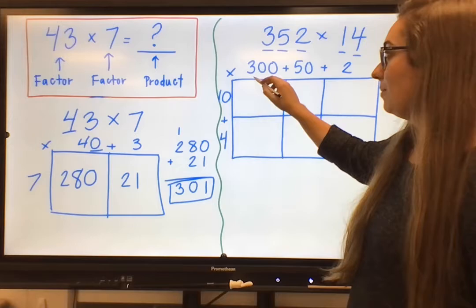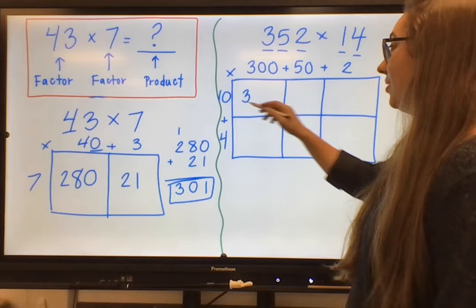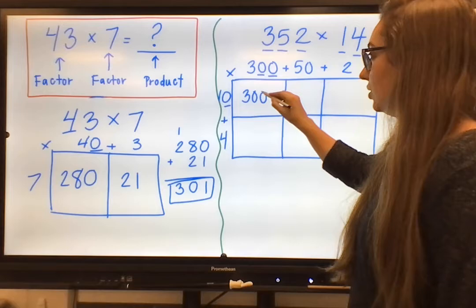So on this first little section, we see that we have the base equation of 3 times 1, which I know to be 3. Then I can add all of the zeros that are in this problem to the end. So I see 1, 2, 3. 1, 2, 3.